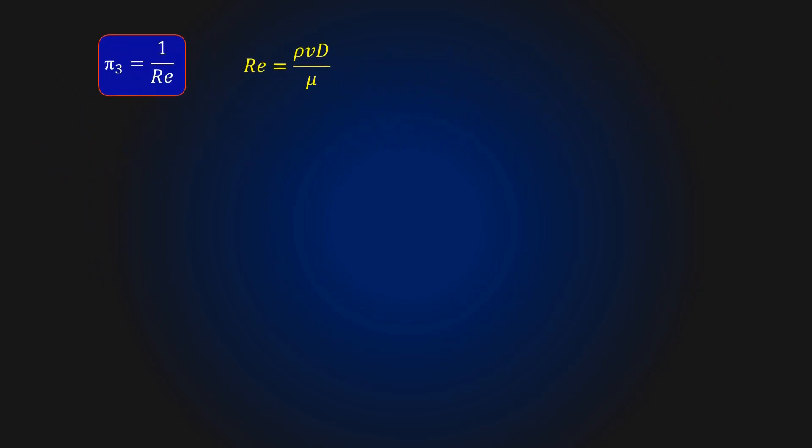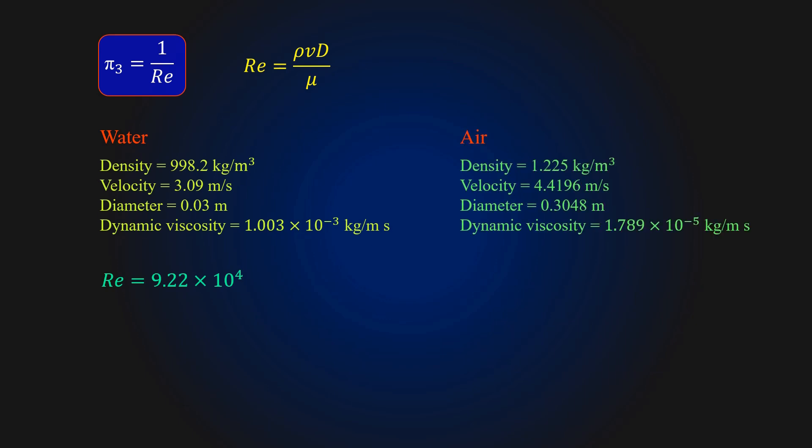Let's see an application of the expression pi3 for a case where similarity can be achieved even when the model fluid is different than the prototype fluid. Consider an example where the prototype fluid water flows at a velocity 3.09 meter per second inside a cylindrical pipe having diameter 0.03 meters. If we calculate the Reynolds number for this case, it comes out to be 9.22 into 10 to the power 4. We can create similar flow conditions for a model fluid air by adjusting the velocity to 4.4196 meter per second and pipe diameter to 0.3048 meters to obtain the same Reynolds number. So for both cases, pipes are geometrically similar since they are both round and the velocity and pipe diameter are selected to ensure that the two flows have kinematic and dynamic similarity.